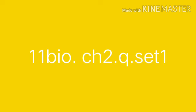What are the three ways reproduction occurs in Monera? Next question: What are the three main groups of Monera?